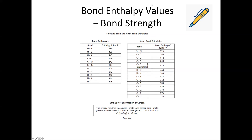Now let's look at how bond enthalpy relates to bond strength. Bond enthalpy is how much energy you need to break one mole of the bonds. Logically, if you need a lot of energy to break one mole of those bonds, they're probably quite strong. So you can use bond enthalpy for relative strength comparisons. For example, comparing a carbon-to-carbon single bond and a carbon-to-carbon double bond, we can conclude the double bond is stronger. In summary: higher bond enthalpy means stronger bond.